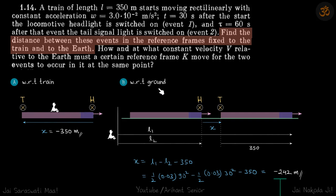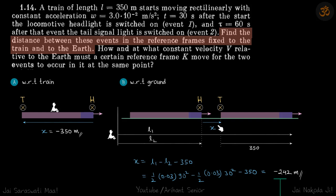Now with respect to the ground, the observer is on the ground and the train is moving along the rails. Let's say initially the train was at one position, and then after some time the tail light was turned on. We take x as the displacement of the final event minus the initial event, with x pointing to the right. Let's call l1 the distance the engine has traveled when the headlight turns on, and l2 the distance traveled when the tail light turns on. The train length itself is 350 meters.